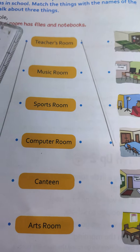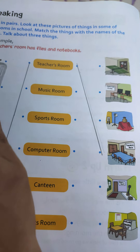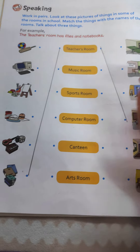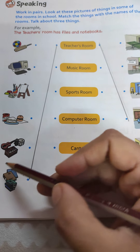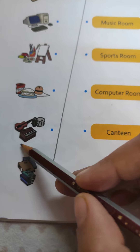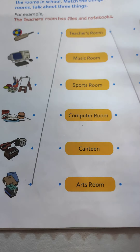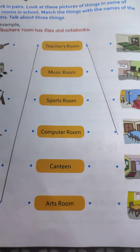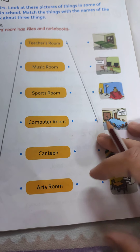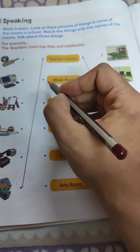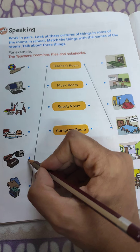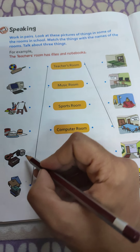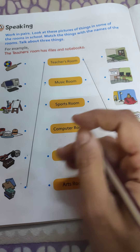Now I am going to give you one more example. Students, tell me — what do we find in the music room? We find computers? No. So we find a lot of musical instruments. Can you see here? This is a guitar. We find tabla, harmonium. And how are you going to do it? The same way — with the help of the scale, you will be drawing one line from this dot to the musical instruments.